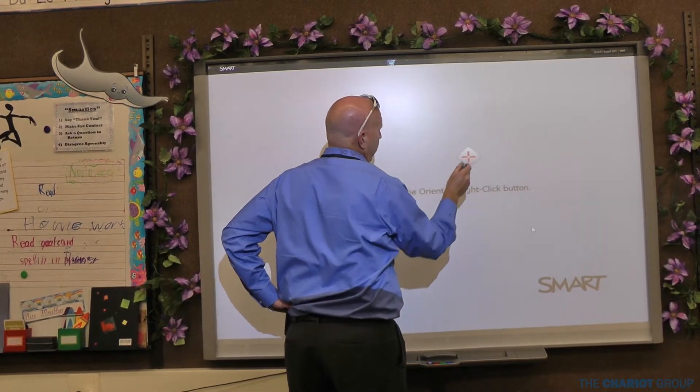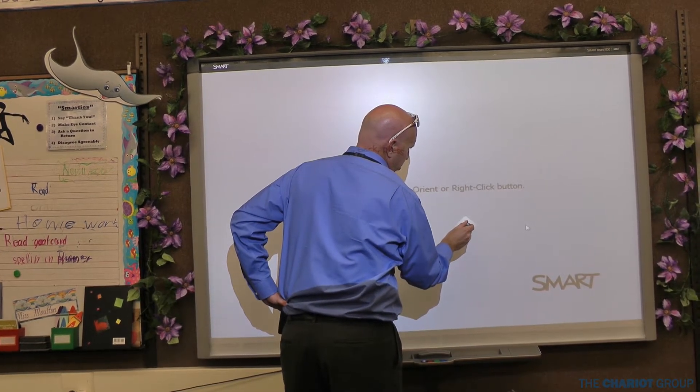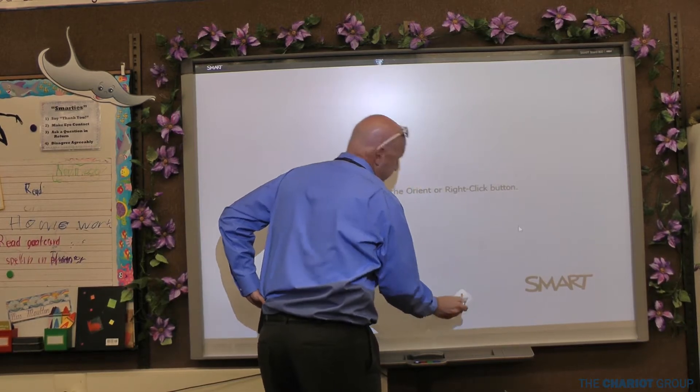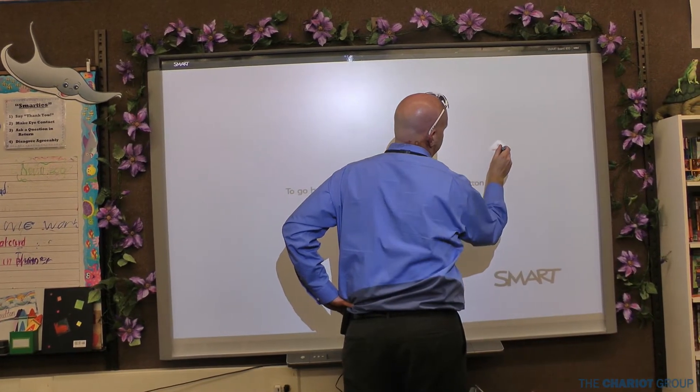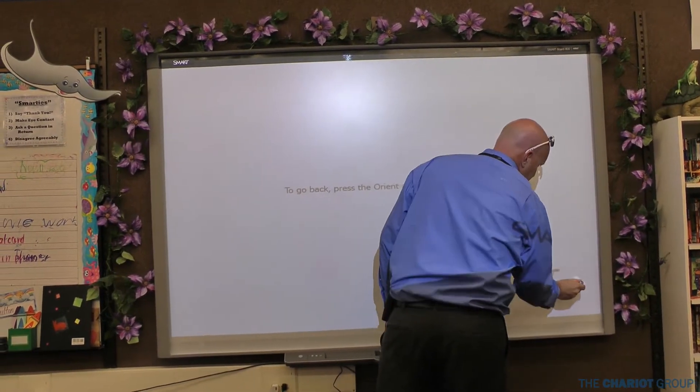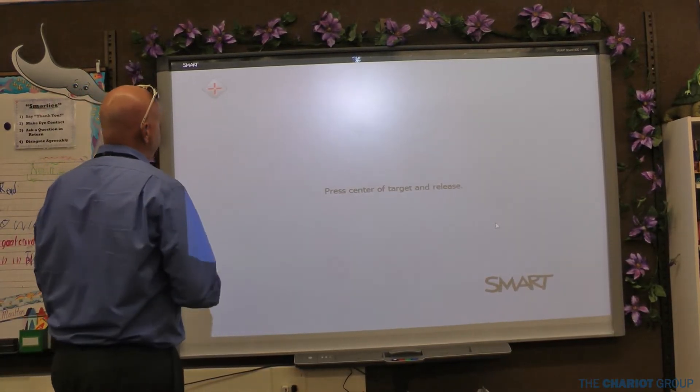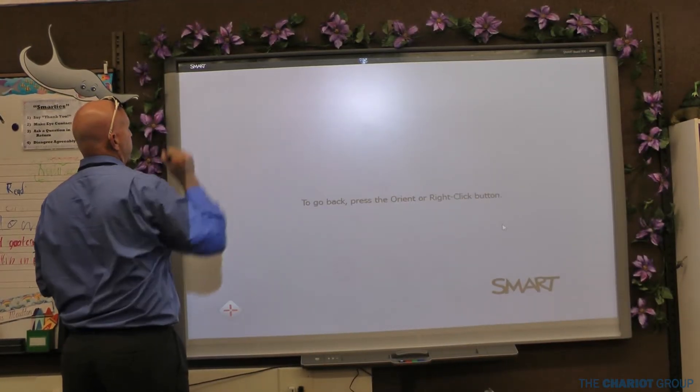If our cameras weren't working, it would not let us do the calibration or let us get part way through and then it would quit, because right now it looks good. So we've most likely been successful with replacing the cameras. Now it's going to switch and this is the normal orientation that teachers are used to. You're going to start outside, slide to the middle, and then release.